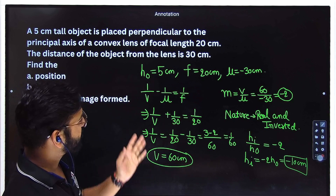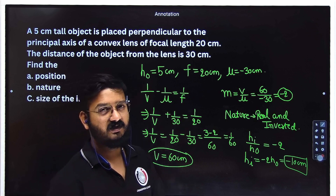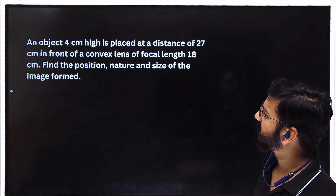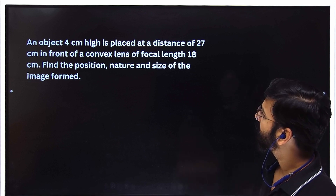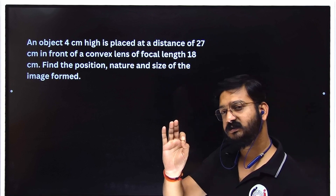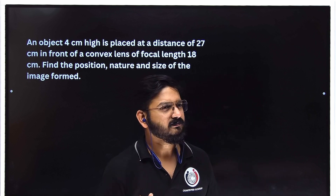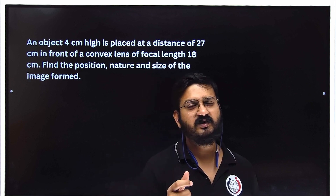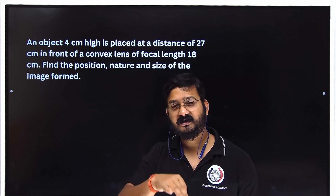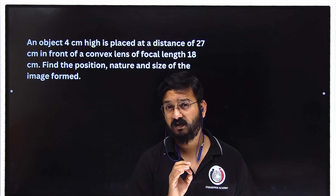This was a moderate level question. Solving these kinds of questions clears your sign convention, magnification formula, and allows you to comment on nature, size and position. The next problem is similar: an object 4 centimeter high placed at a distance of 27 centimeter in front of a convex lens. I would like you to try this as homework. Write the answer in the comment box. These kinds of questions are very scoring and sure shot in your board exam. We will now solve one more question involving the concept of power.